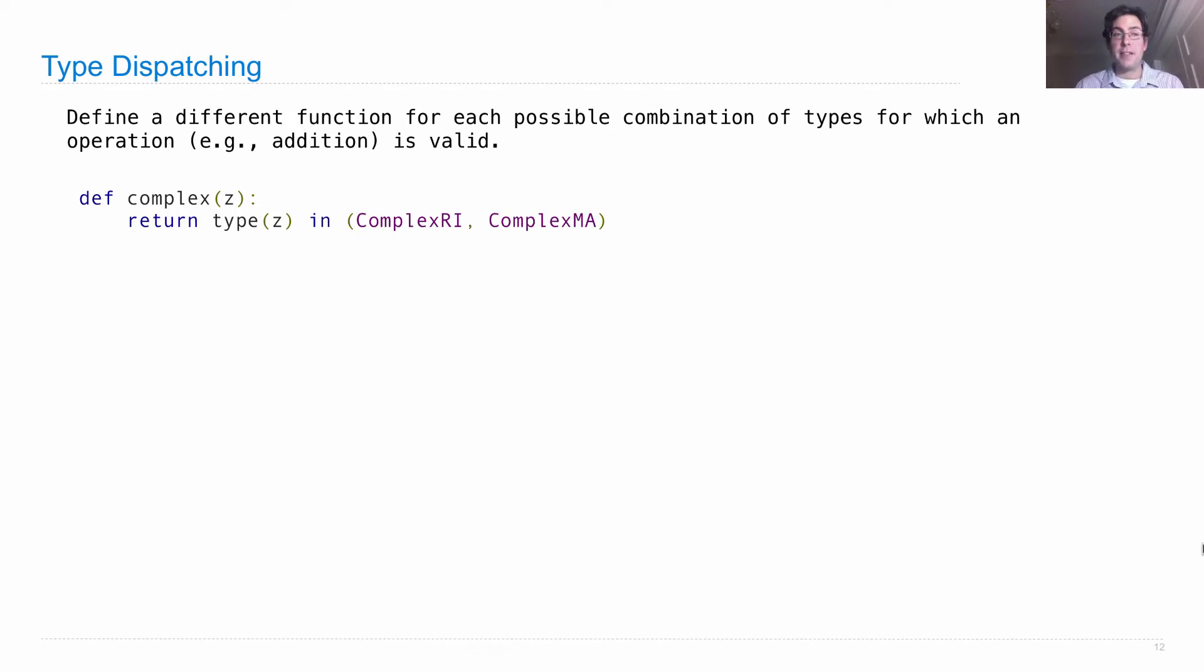Let's create some helper functions that we'll use. One tells us whether z is a complex number. Another tells us whether z is a rational number.